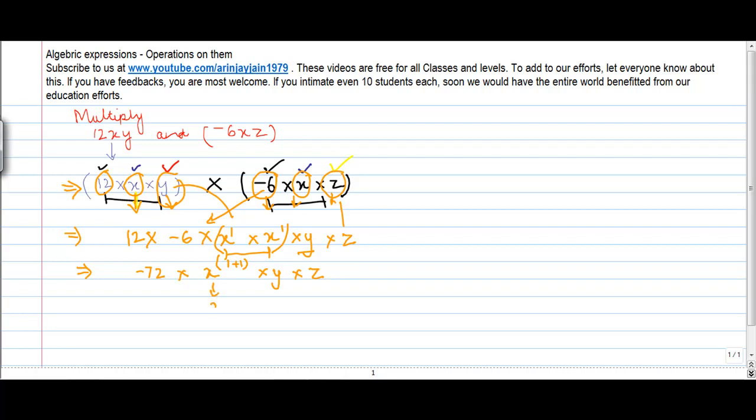So this can be written as x to the power 2. This can be written as minus 72 and then y and then z. I have just removed the multiplication sign because when we write this way also, it implies that it is being multiplied. So my solution comes to minus 72 x squared y z.